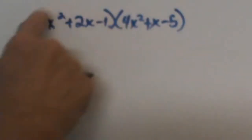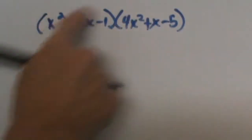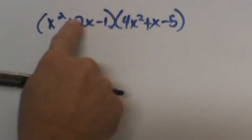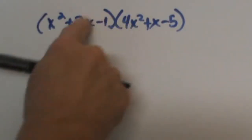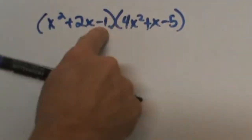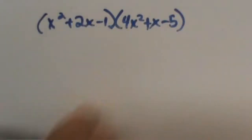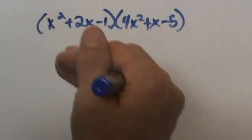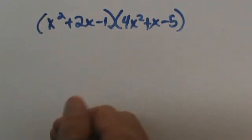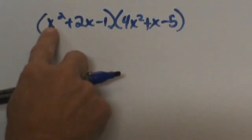We have to take each of the terms in the first trinomial and distribute them in. So this one's going to have 1, 2, 3, 4, 5, 6, 7, 8, 9 terms to add together. This is a really good time to stack them so that it makes it easier to multiply.